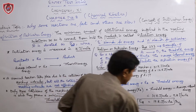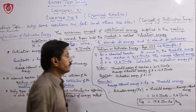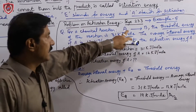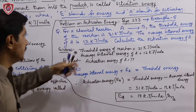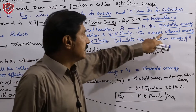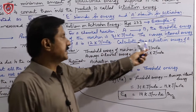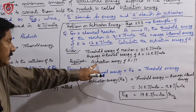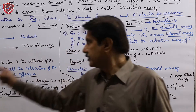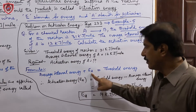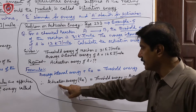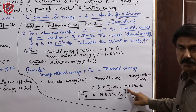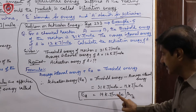Let me solve an example from your book — Example 5 on page 233. A general reaction shows reactant A converting to product B. The threshold energy given is 31 kJ/mol and the average internal energy is 12 kJ/mol. You need to find the activation energy. Using the formula: Average Internal Energy + Activation Energy = Threshold Energy, therefore Activation Energy = Threshold Energy − Average Internal Energy = 31 − 12 = 19 kJ/mol.